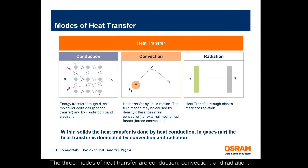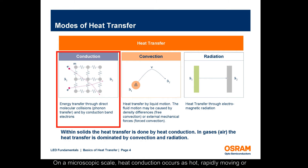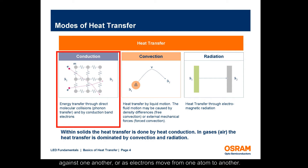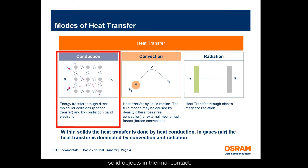The three modes of heat transfer are conduction, convection, and radiation. On a microscopic scale, heat conduction occurs as hot, rapidly moving or vibrating atoms and molecules interact with neighboring atoms and molecules, transferring some of their energy. Heat is transferred by conduction when adjacent atoms vibrate against one another, or as electrons move from one atom to another. Conduction is the most significant means of heat transfer within a solid or between solid objects in thermal contact.